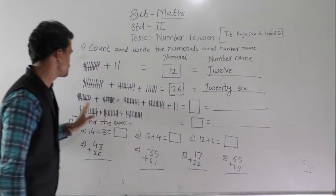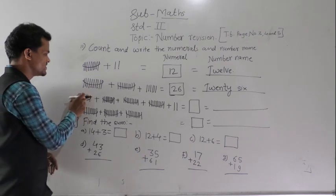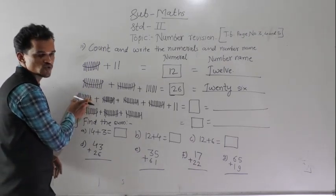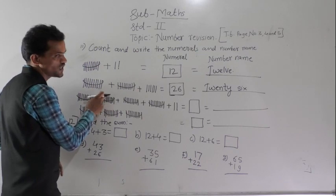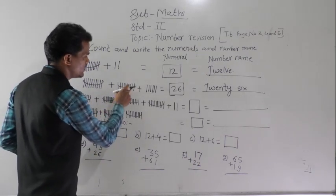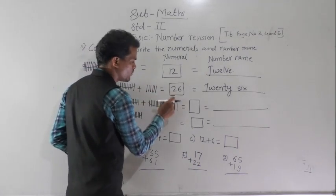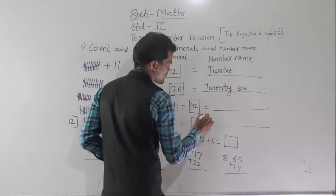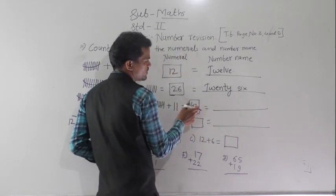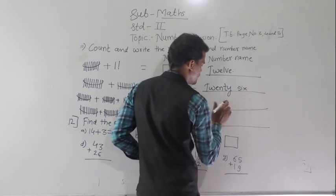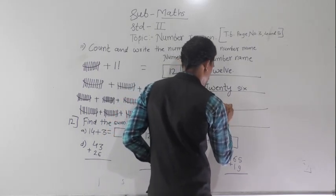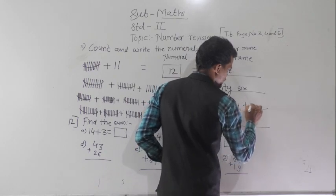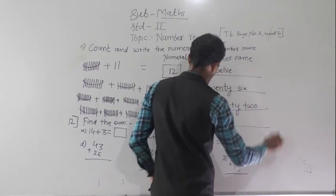Next: there are four bunches of 10 pencils and 2 single pencils. So 10 plus 10 plus 10 plus 10 equals 40, plus 2 equals 42. Write 42 in numerals and in words: F-O-R-T-Y T-W-O.